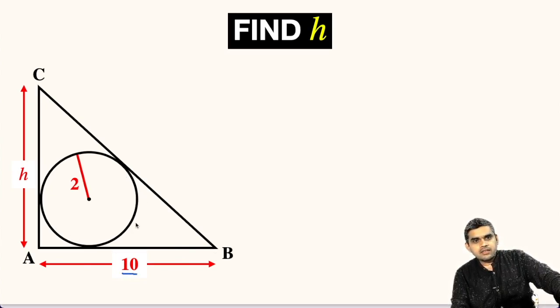Inside this triangle a circle of radii 2 units is also given and we are asked to find the measure of side AC of this triangle which is small h.